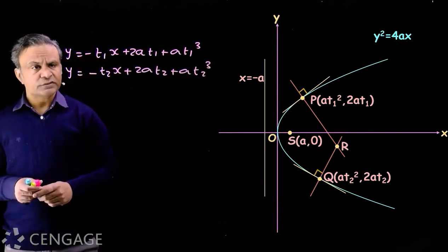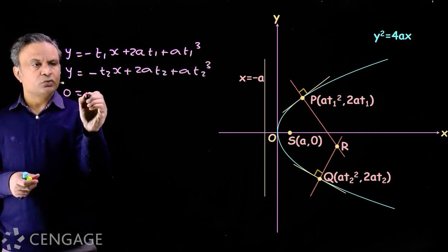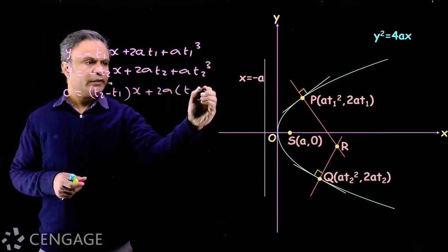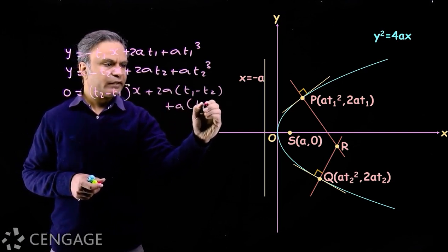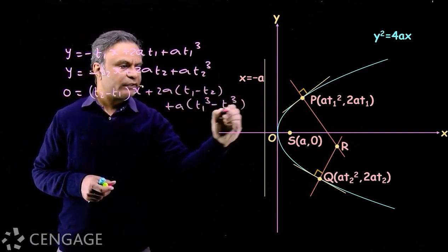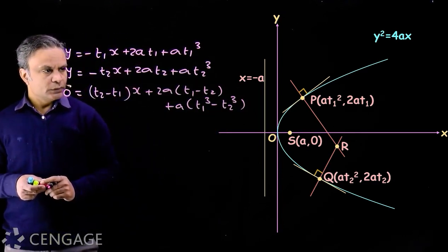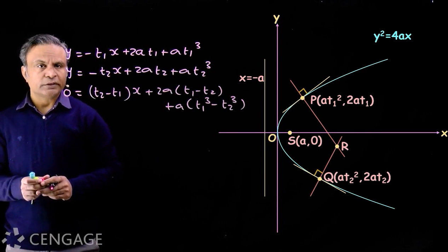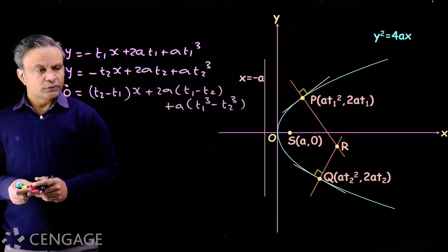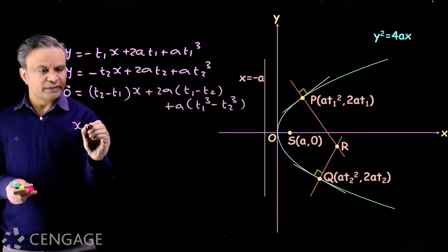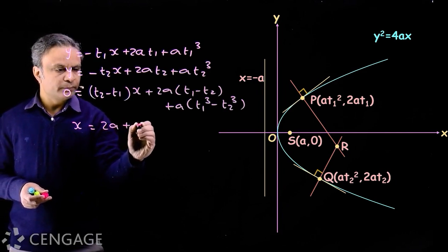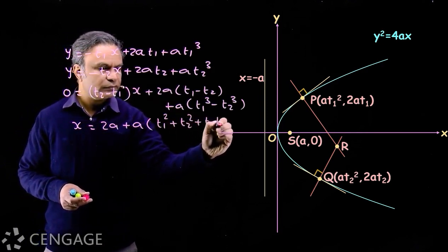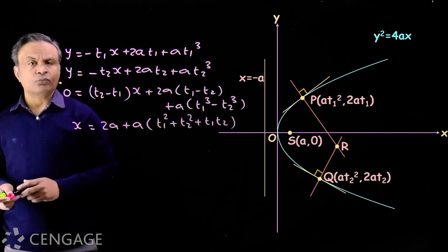We solve these two equations by subtracting. We get: 0 = (t2 − t1)x + 2a(t1 − t2) + a(t1³ − t2³). Factoring out (t1 − t2), which cancels since t1 ≠ t2, we get x = 2a + a(t1² + t2² + t1·t2). This is the x-coordinate of point R.